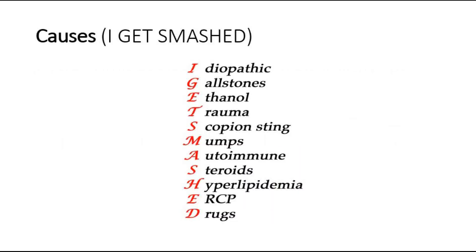These are the few causes of acute pancreatitis, and the mnemonic to remember it is 'I GET SMASHED.' I is for idiopathic. Other causes include gallstones, ethanol or alcohol, trauma, scorpion sting, mumps or other infections like varicella zoster virus, cytomegalovirus, and parasitic infections.